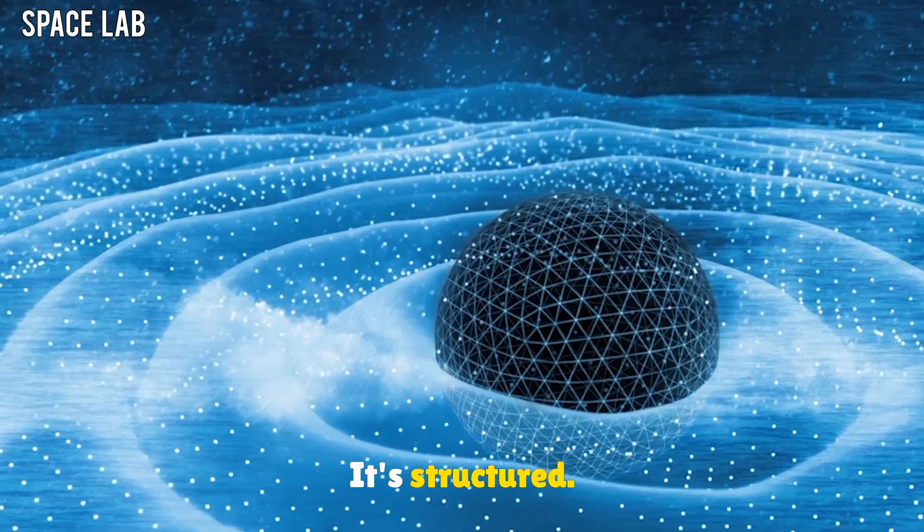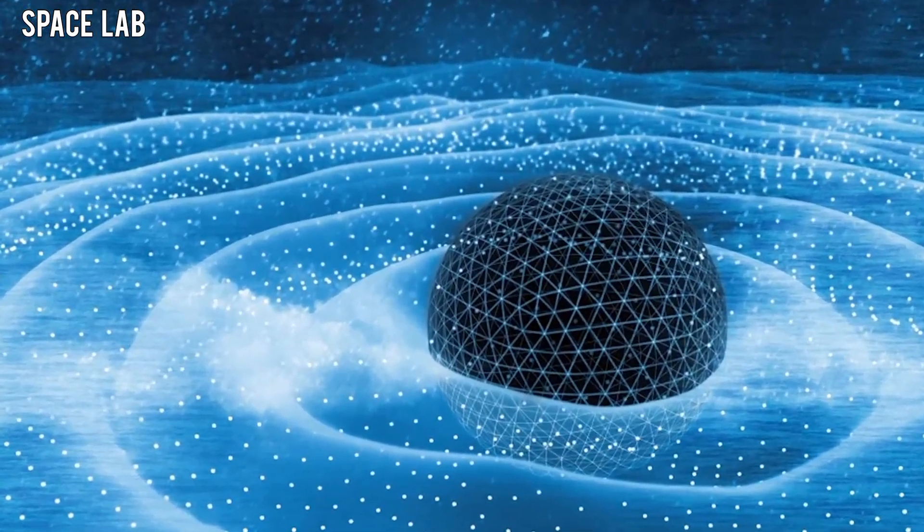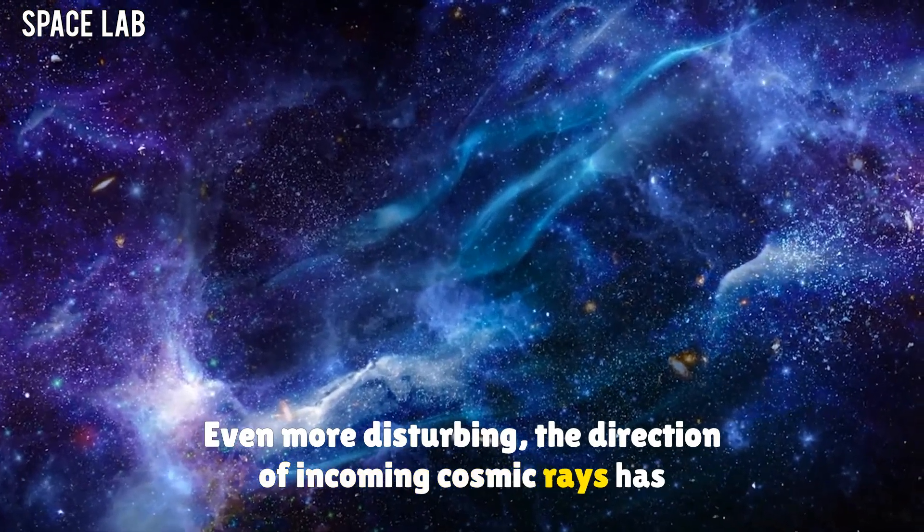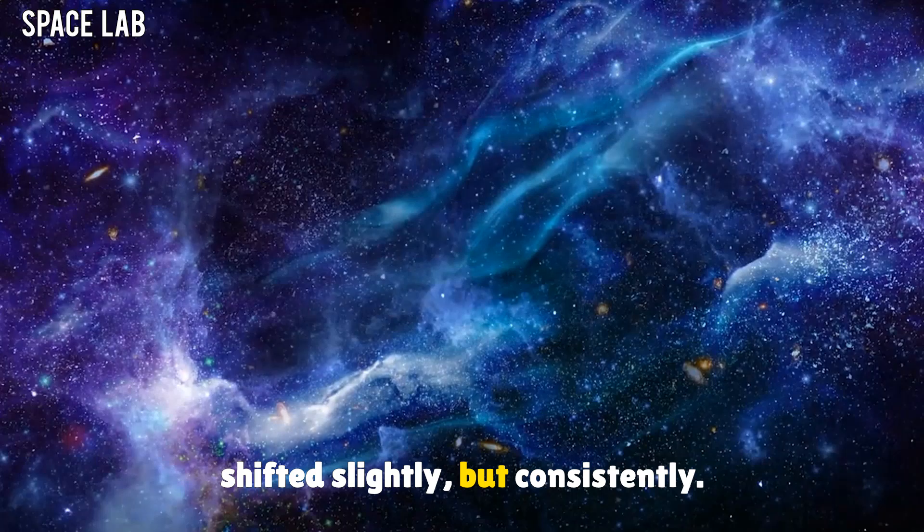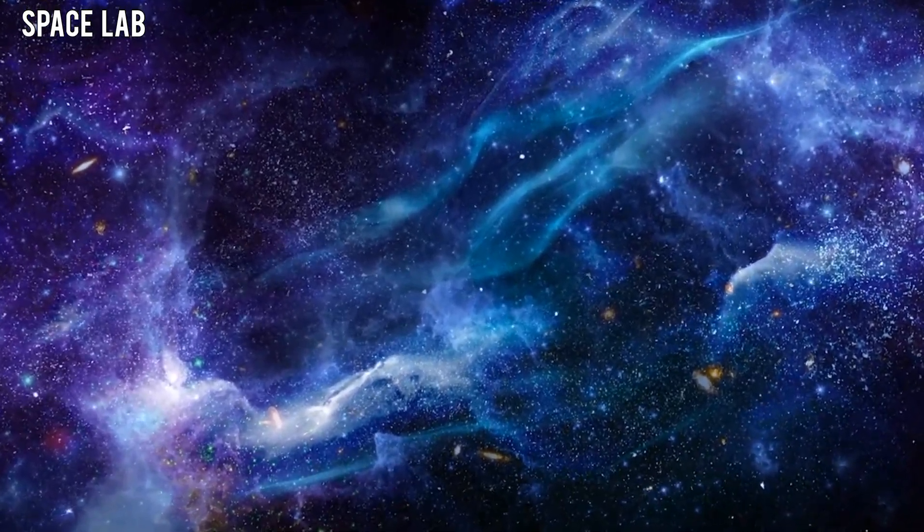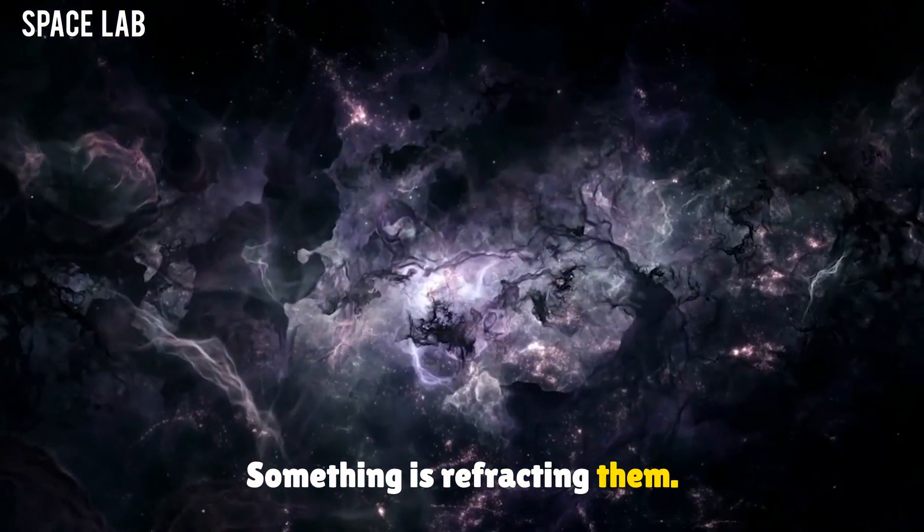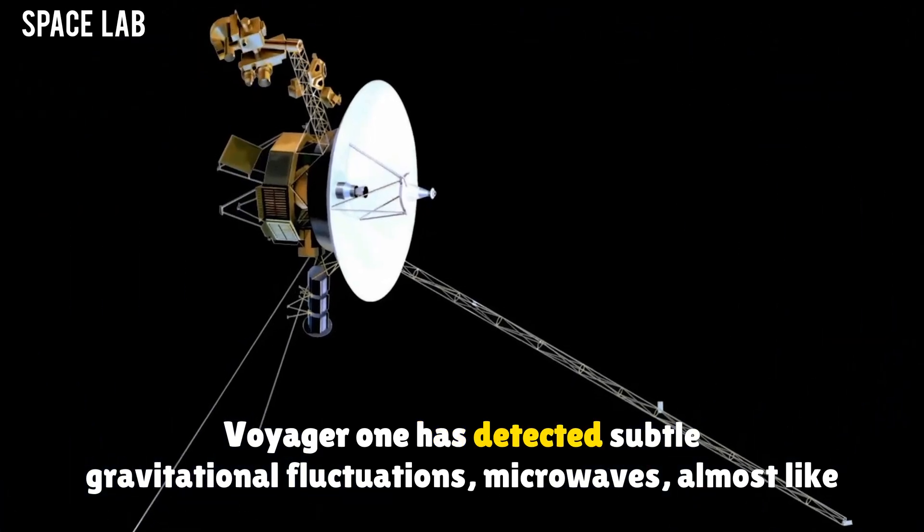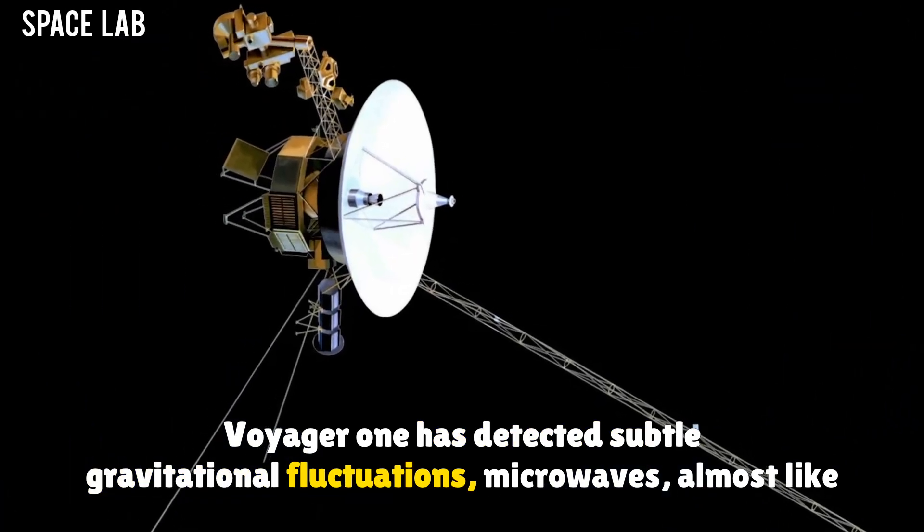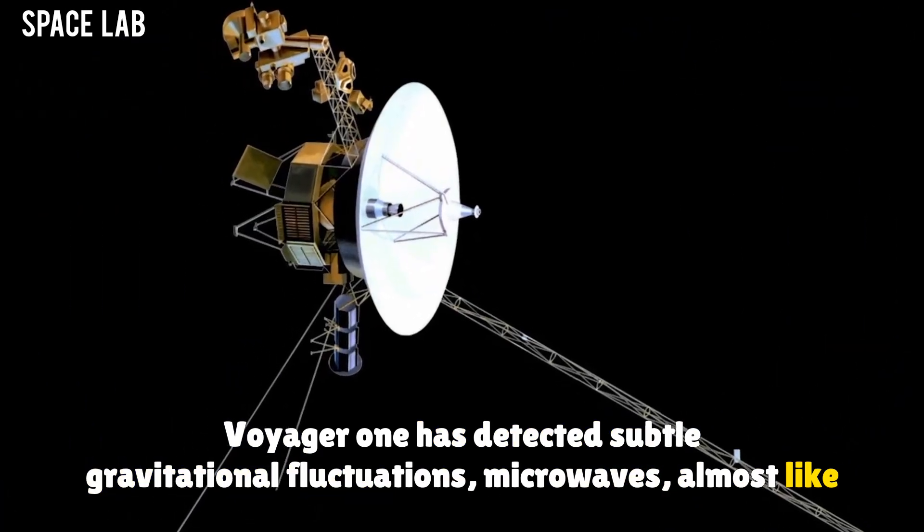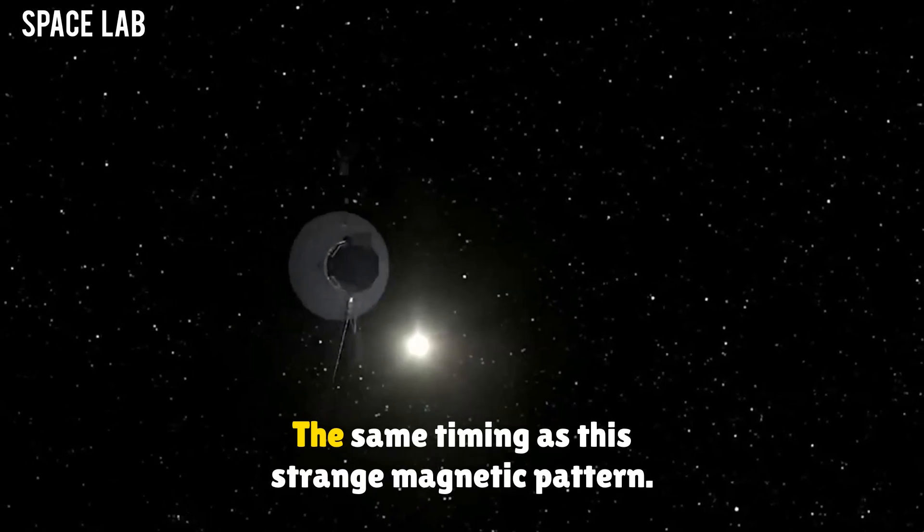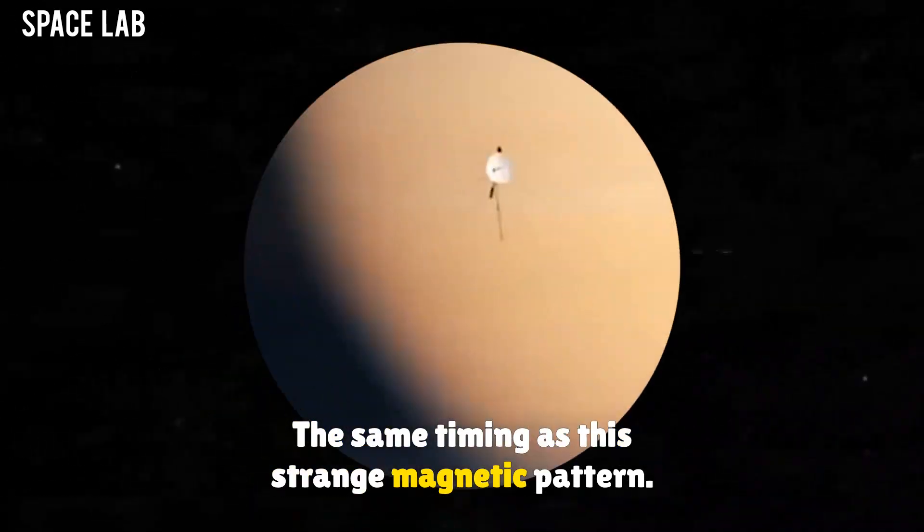Even more disturbing, the direction of incoming cosmic rays has shifted, slightly, but consistently. Something is refracting them. And here's the kicker. Voyager 1 has detected subtle gravitational fluctuations, microwaves, almost like tremors, pulsing every 17 hours. The same timing as this strange magnetic pattern.